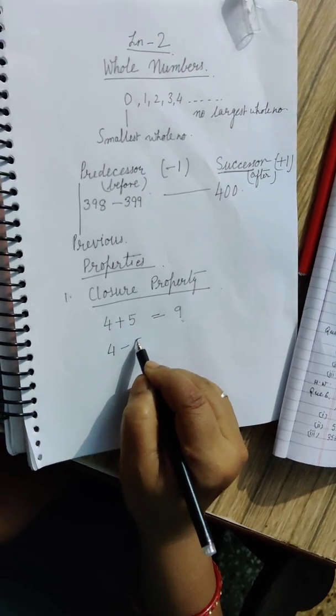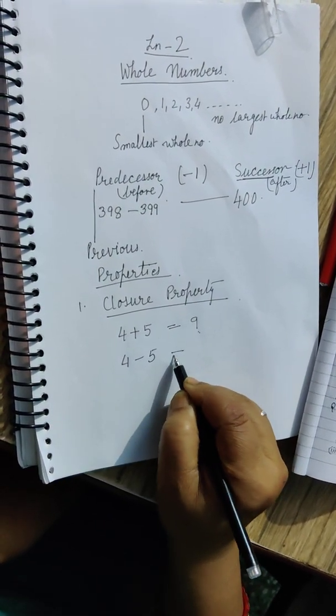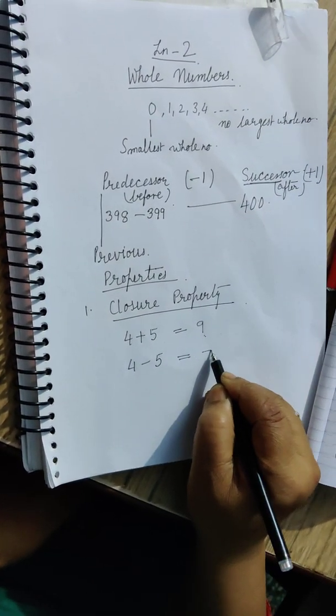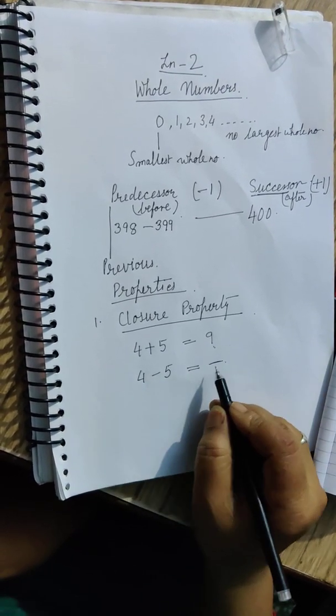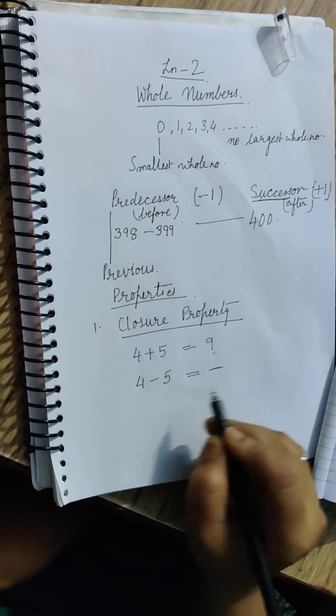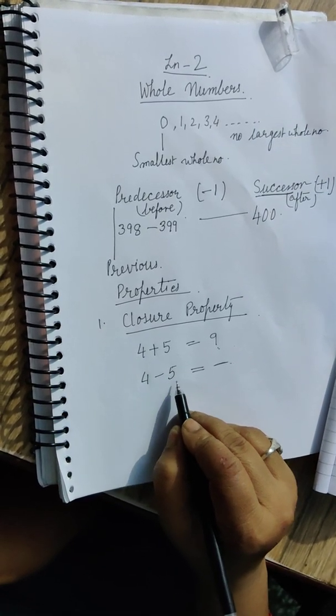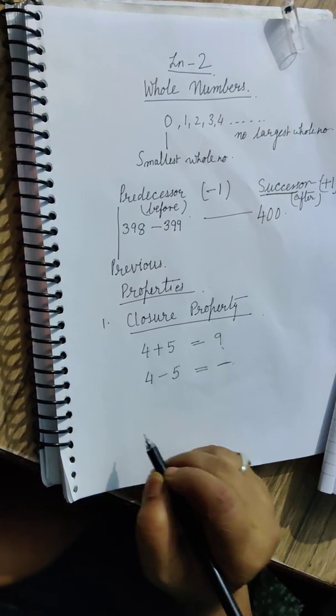As far as subtraction is concerned, 4 minus 5. So answer will be a negative number. But negative numbers do not come in whole numbers. So closure property does not satisfy in subtraction.